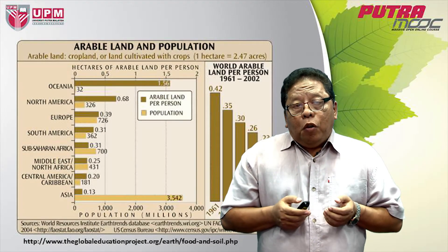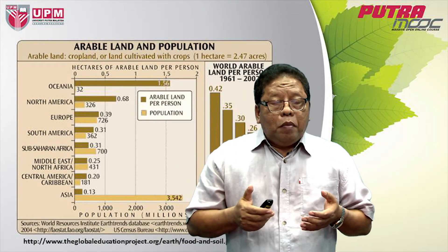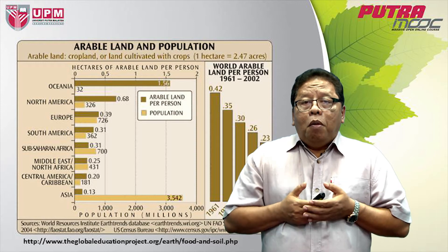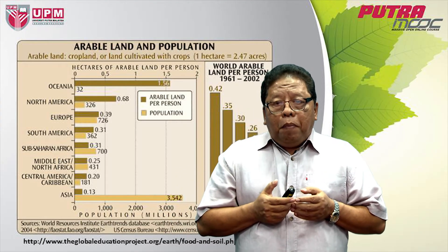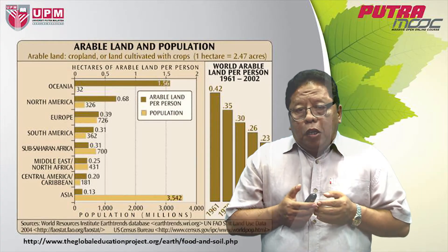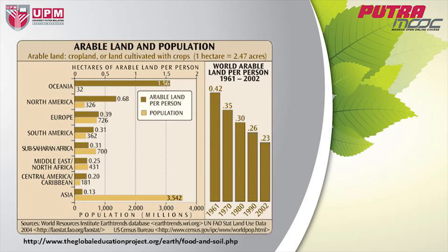If you look at the relationship between population and arable land — arable land meaning the land for production of food — if you look at the world arable land per person, we see that in 1960 the world arable land per person was 0.42 hectares. The size of arable land cannot increase; it exists as it is. But the population keeps on increasing, and so the per capita arable land decreases with time.